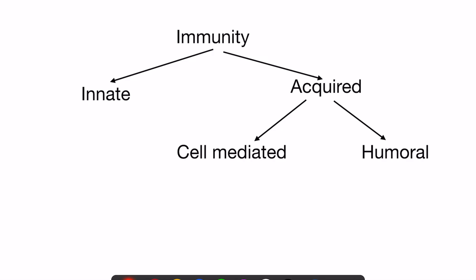The body has various mechanisms to provide defense against foreign agents, which can be bacterial infections, fungal infections, or viral infections. There are two basic types of mechanisms: innate immunity and acquired immunity. Innate immunity is present since birth.